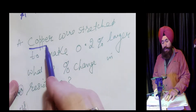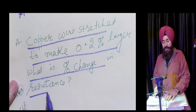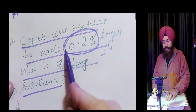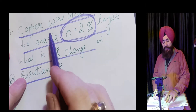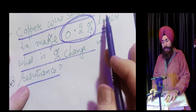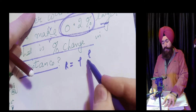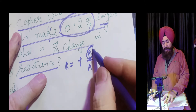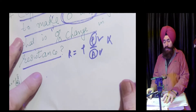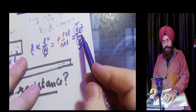Now the second question: a copper wire is stretched to make it 0.2% longer. What is the percentage change in resistance? Again they are talking about a change in length of the resistance. The formula is R equals rho L upon A, but when there is a change in length there will be a change in area, so we don't use this formula directly. We again use R equals resistivity times L squared upon V.